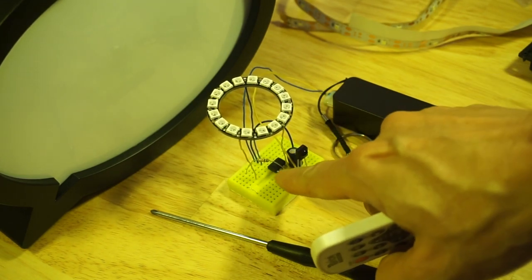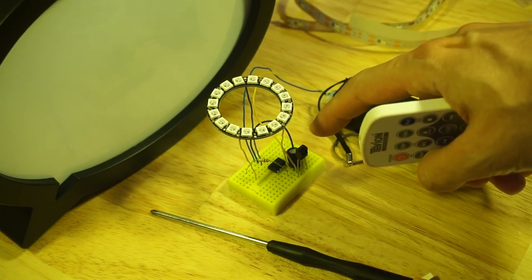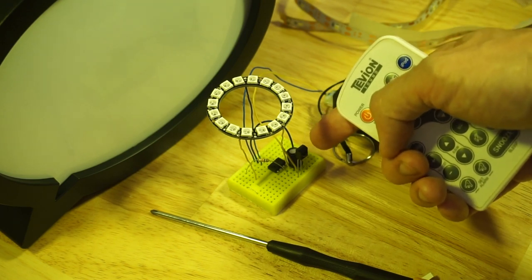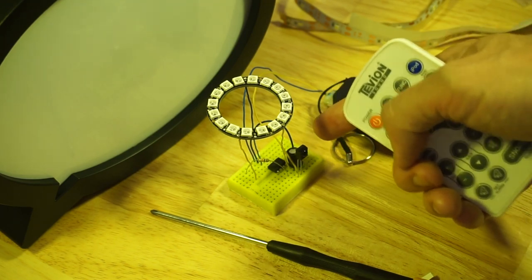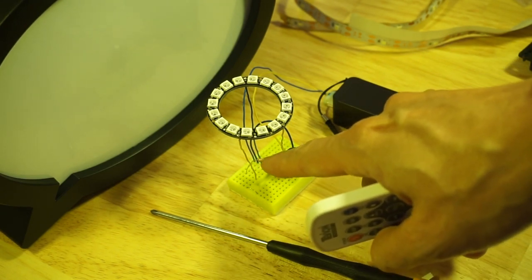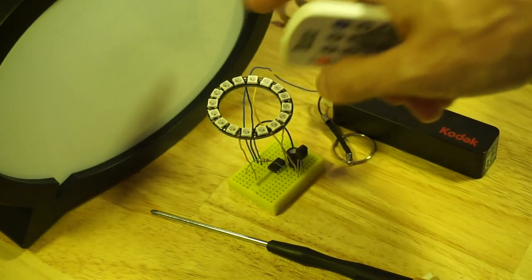There's the ATtiny85, capacitor in order to stabilize or remove some of the ripple from the power supply. And, well, they recommended the resistor. I'm not sure if the 10K resistor was quite needed on the signal line, data in to the NeoPixel ring.